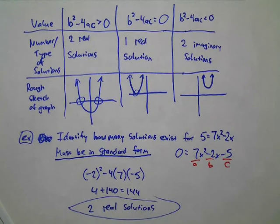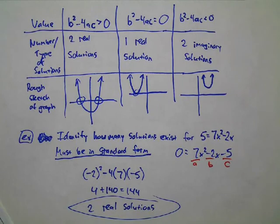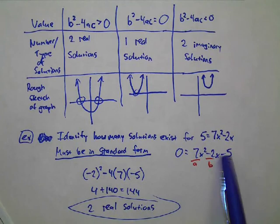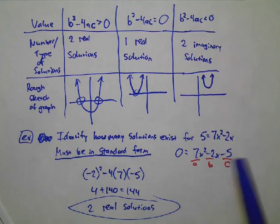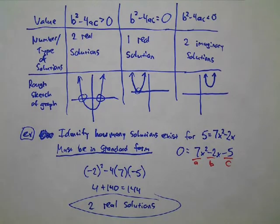The discriminant is just a shortcut for situations where you only want to know how many solutions and what types you get. You could totally just use the quadratic formula, get the solutions, and then say there are two of them and they're both real. But that's overkill — in this case, you only had to find the number of solutions.